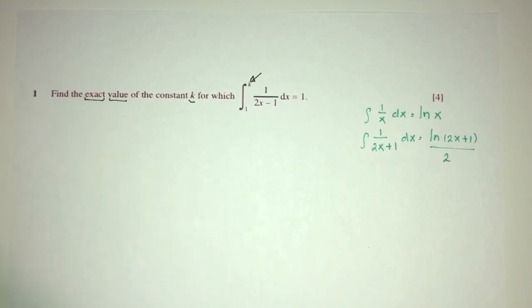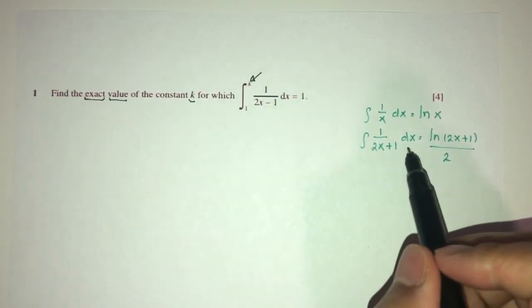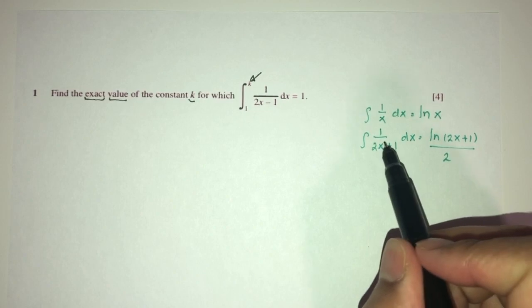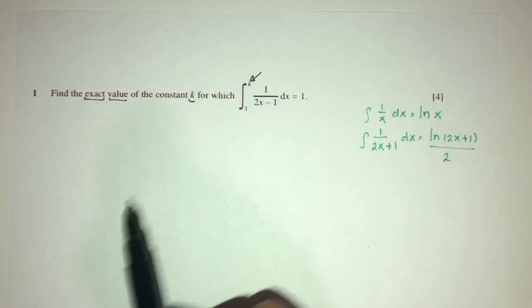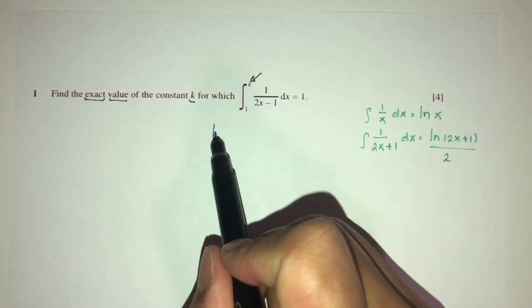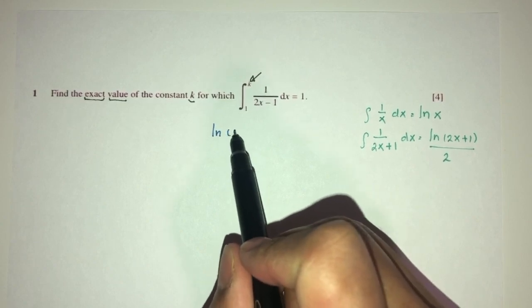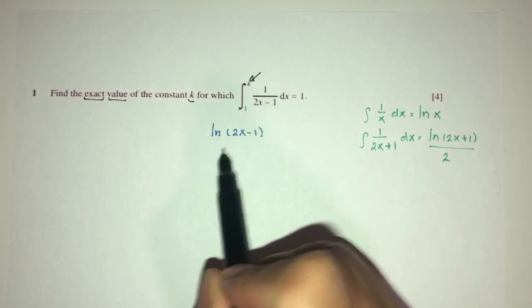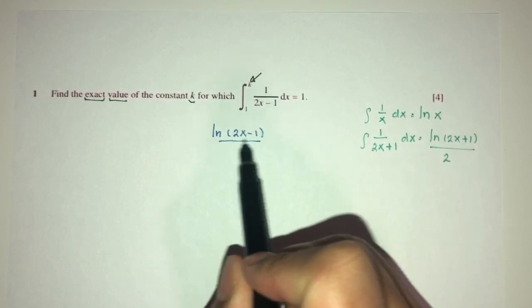Same way for this one. Since it is linear, meaning the power of x is 1, we can do this. Here we have, that would be ln of the value below, which is 2x minus 1, divided by d by dx of this, which will be 2.